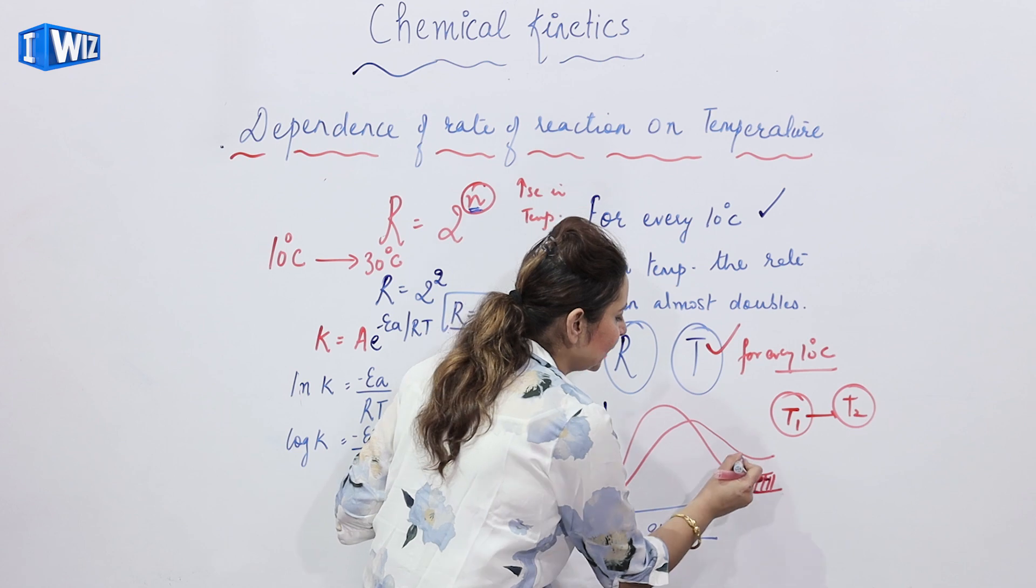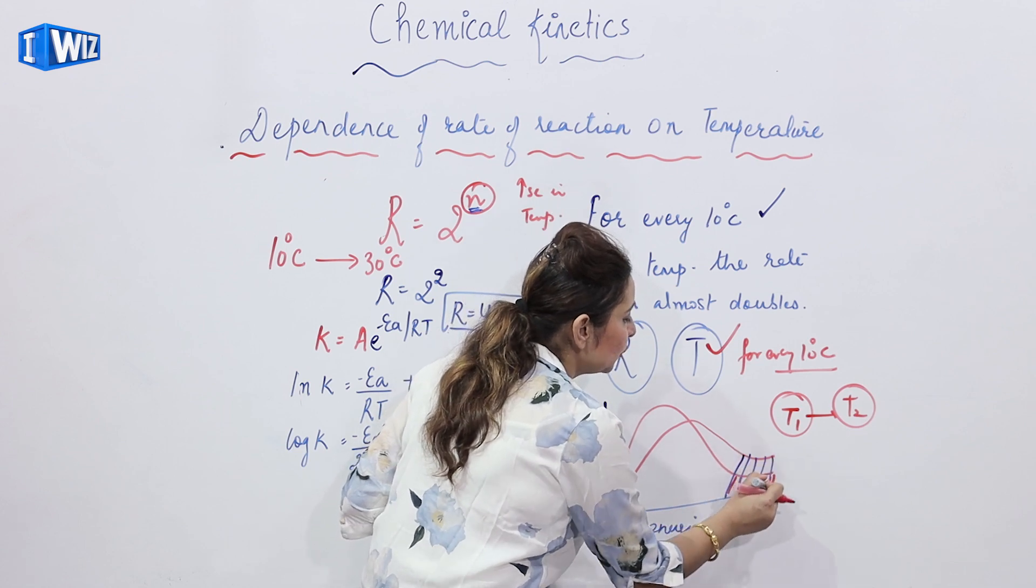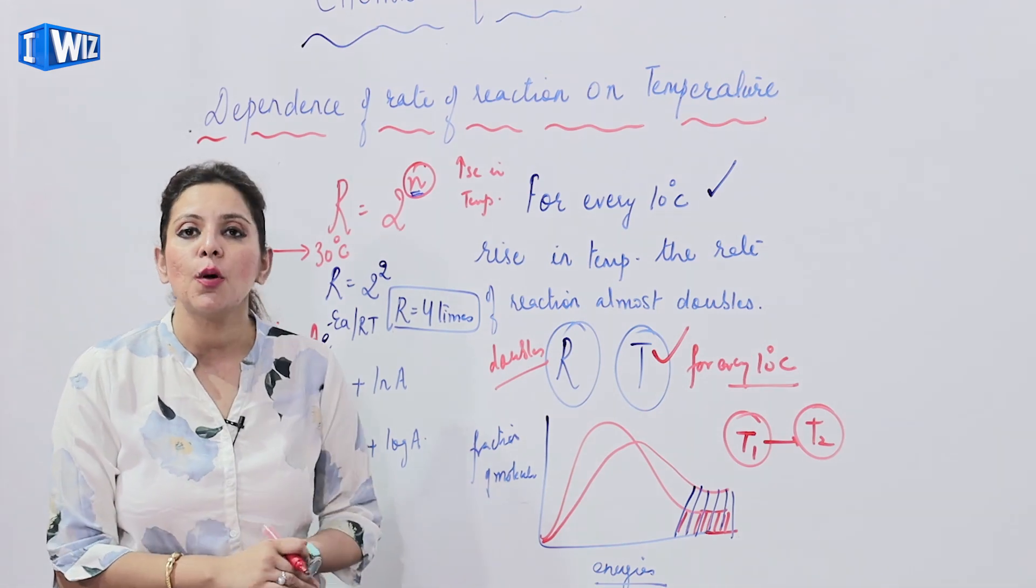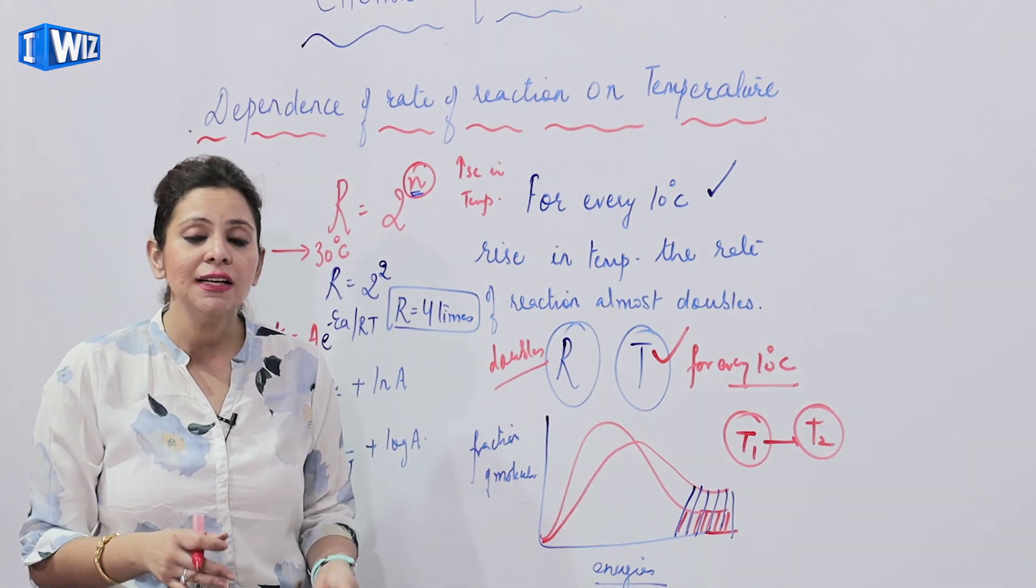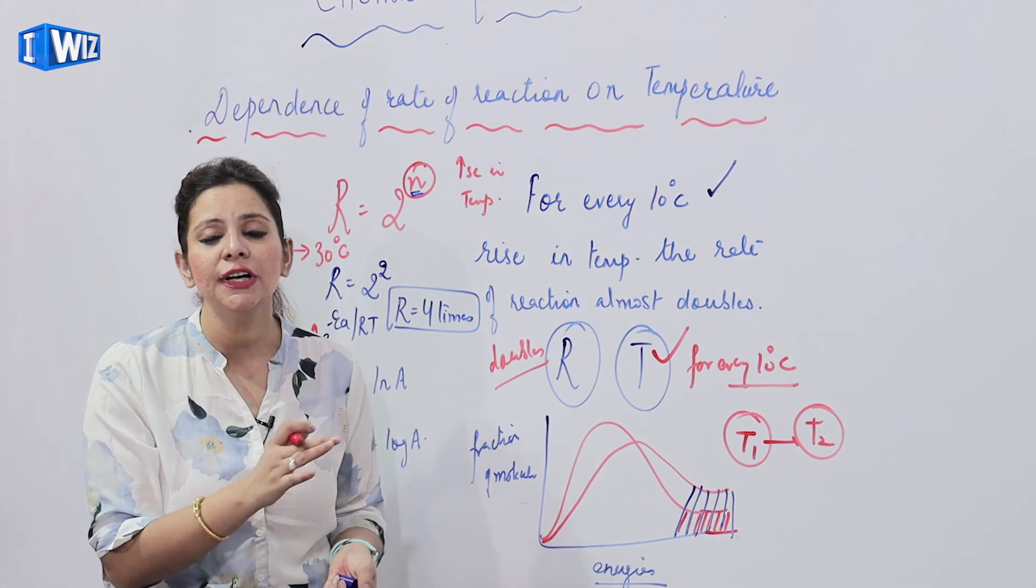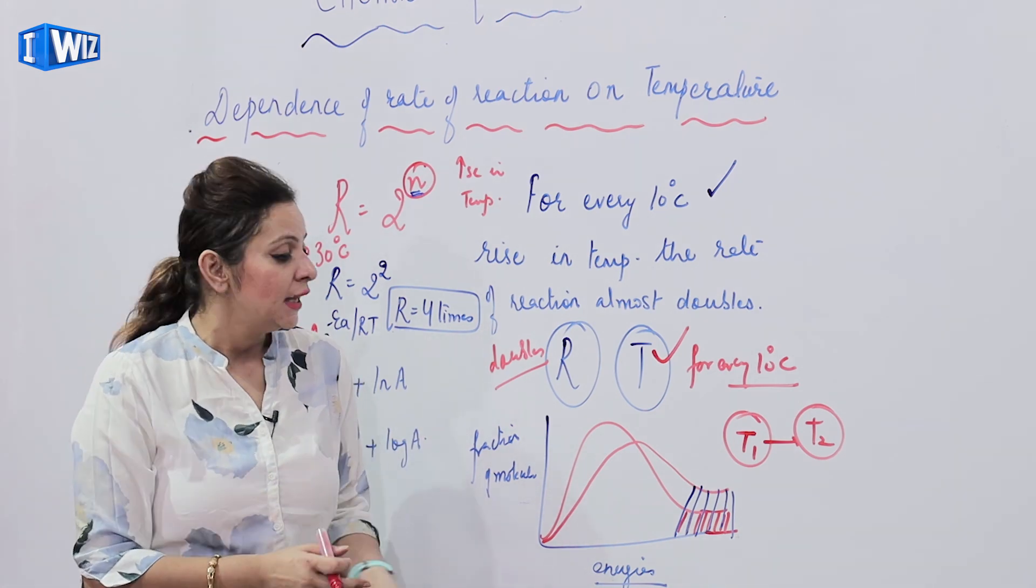Now we can see that large number of molecules possess the energy equal to threshold energy and proper orientation. That is the reason because the number of molecules that are crossing that and with proper orientation and the proper energy is increasing.